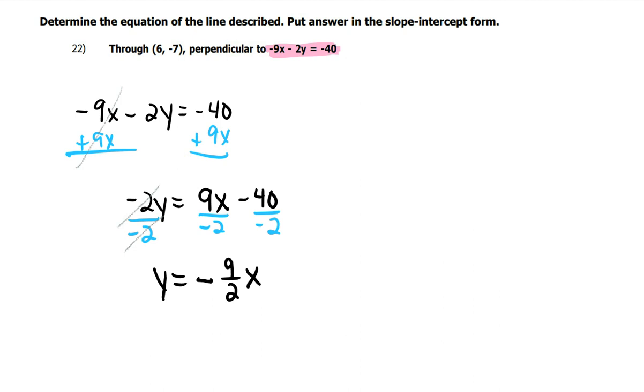9 halves x. And negative 40... I got to do this here. Negative 40 divided by negative 2. That's a negative divided by a negative. So it's a positive 20.